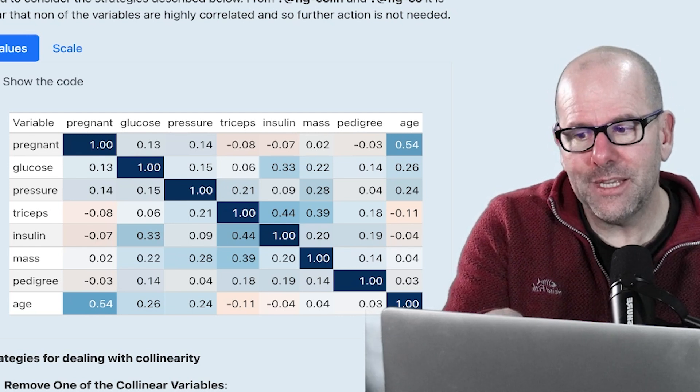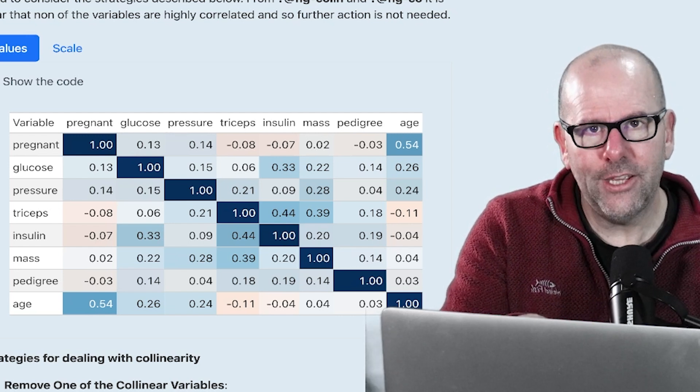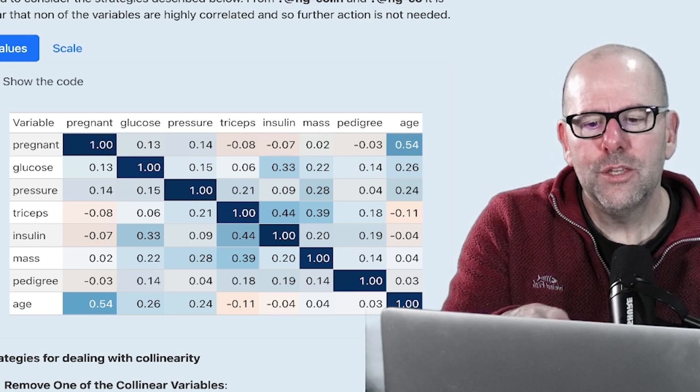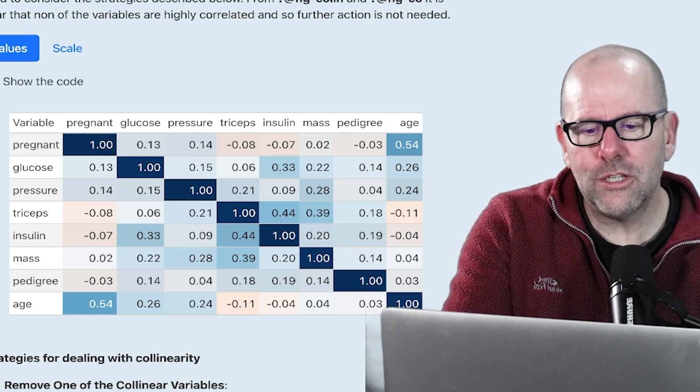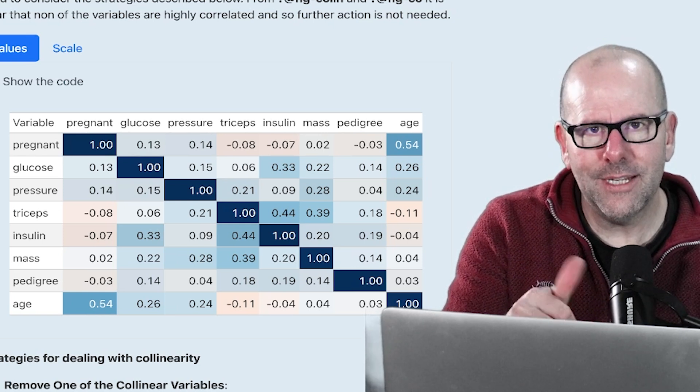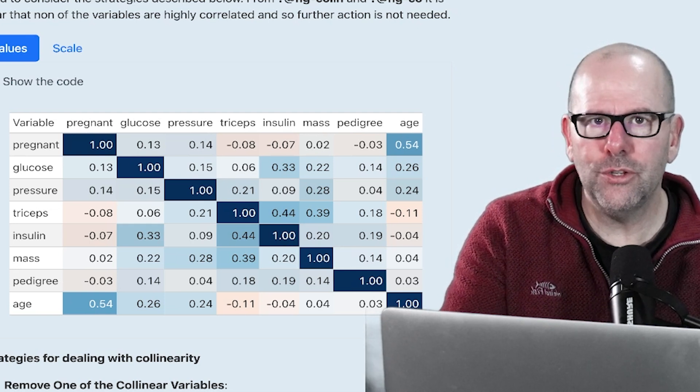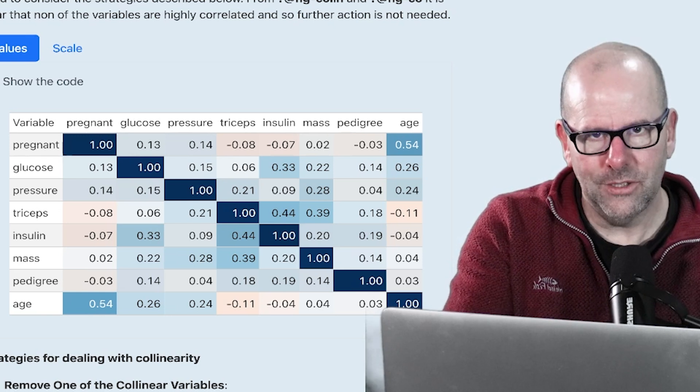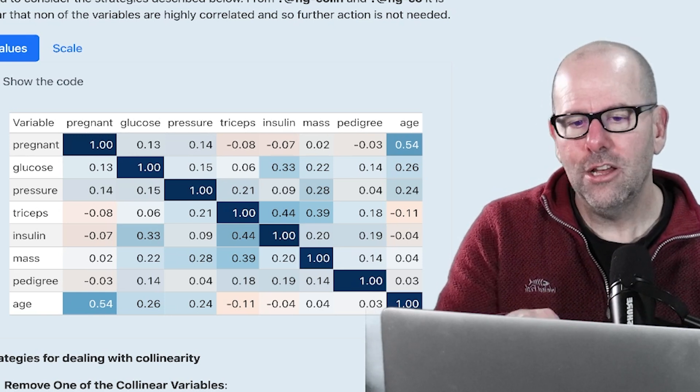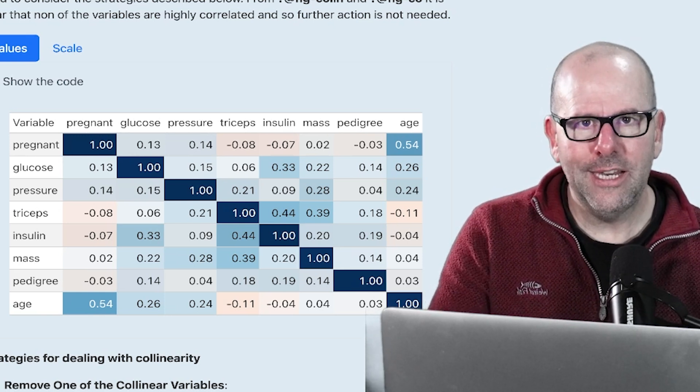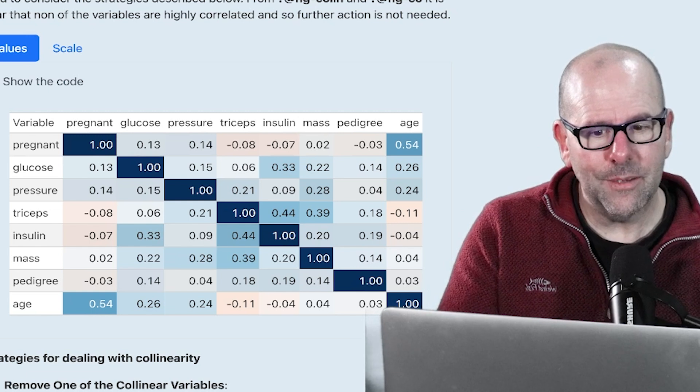We're not going to talk about that in this video. That's going to be in the video that is to come on checking your assumptions. But my point is that even once you've done this check, it might look like everything's fine, double thumbs up. In fact, a problem may still emerge when you do the checking for assumptions when the model is created. This isn't the end of our conversation on collinearity, but at least you understand the concept.